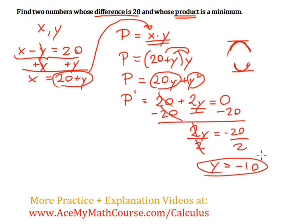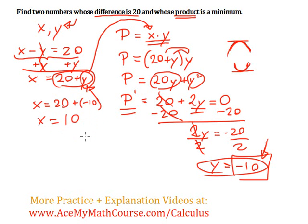What does that mean? Well, that means that when y is negative 10, we have potentially a minimum product. We're going to check in a second, by the way. But if y is negative 10, what is x? Well, I can plug in the negative 10 right here. So x is equal to 20 plus negative 10, which is equal to 20 minus 10, which is 10. So the two numbers are 10 and negative 10.